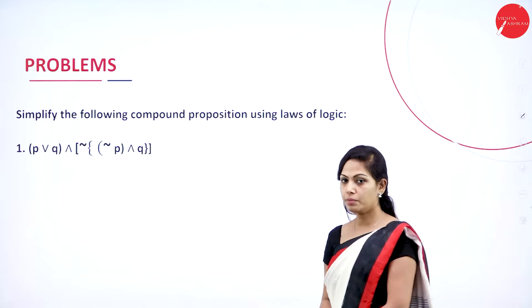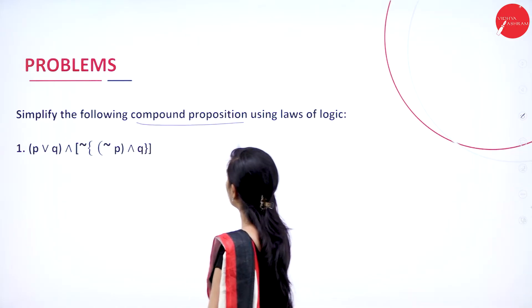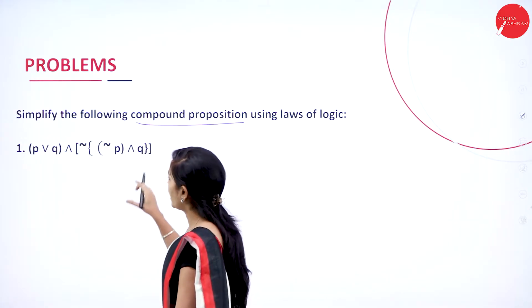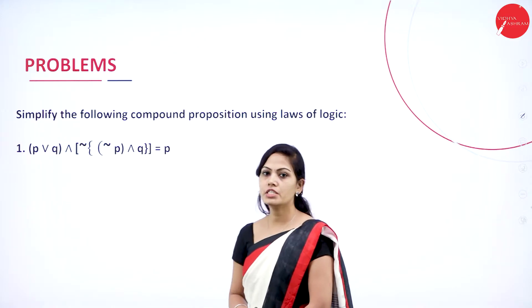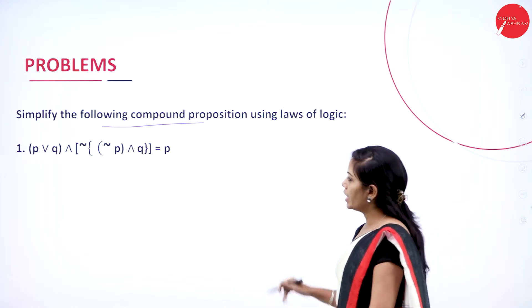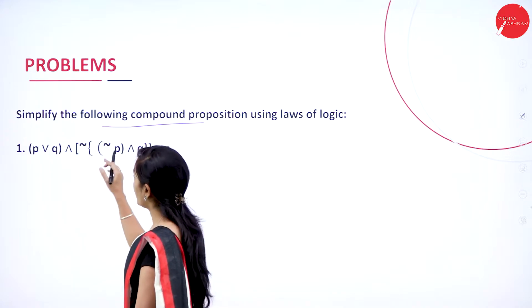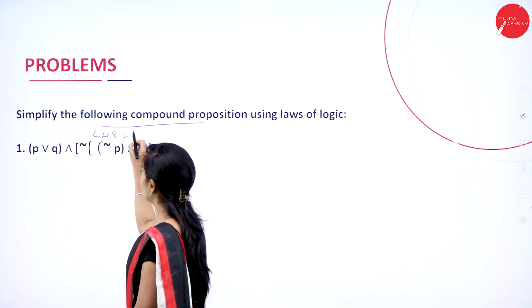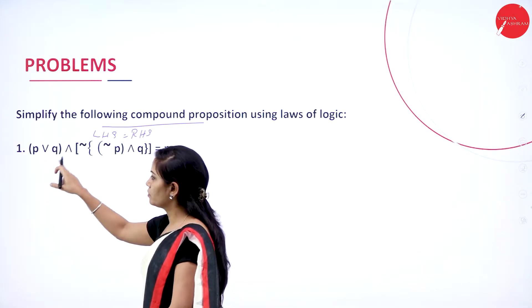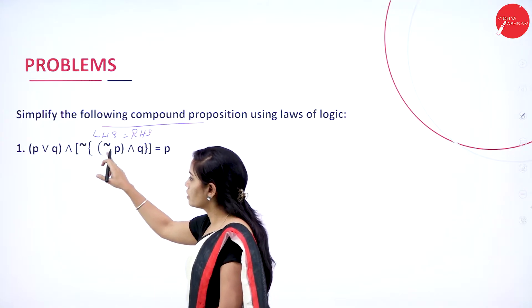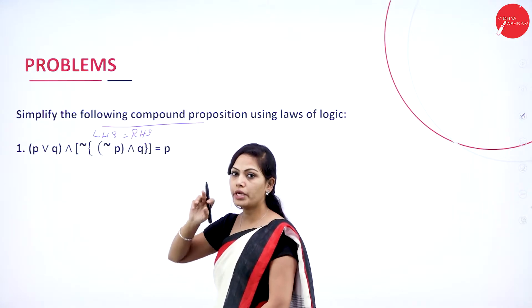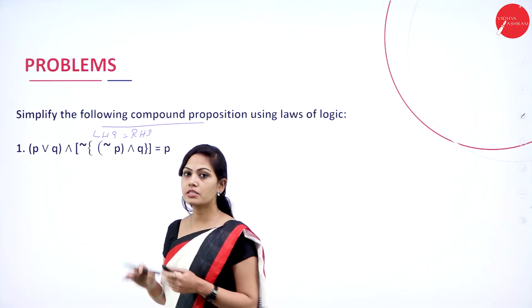Today I will discuss problems on laws of logic. Simplify the following compound proposition using laws of logic. The first problem: simplify and prove that LHS is equal to RHS. The LHS is P ∨ Q ∧ ¬(¬P ∧ Q) and the RHS value should be P.